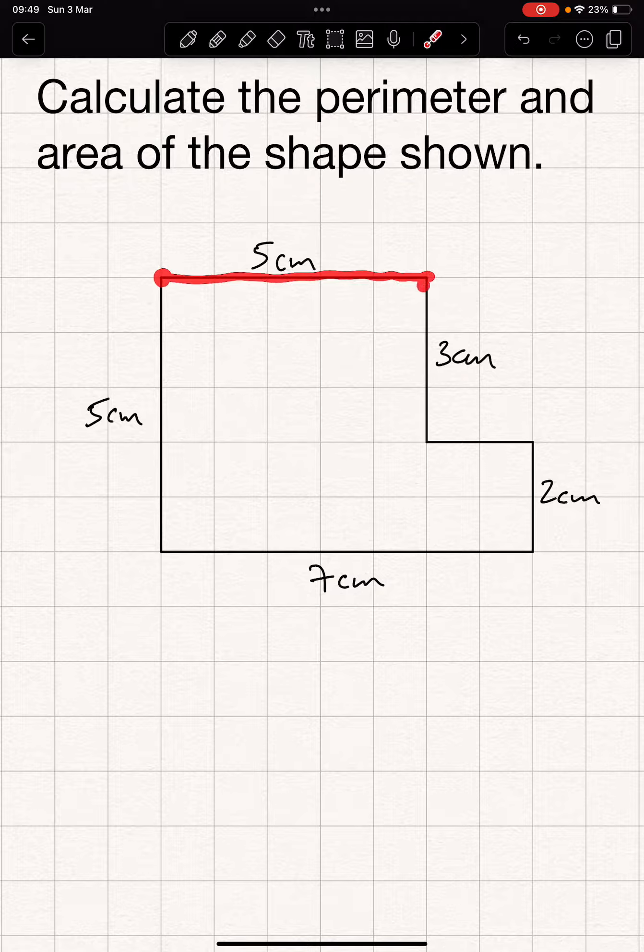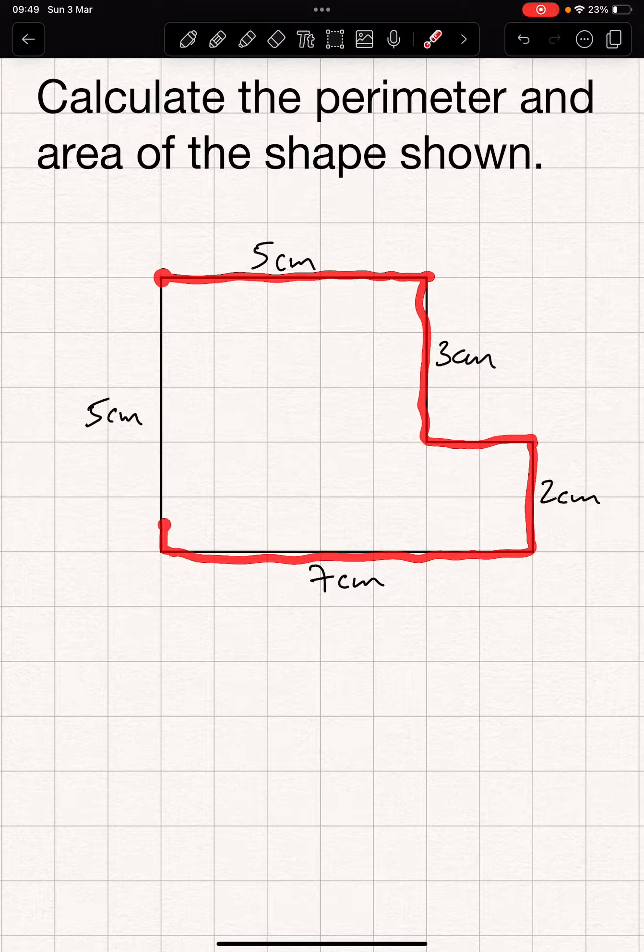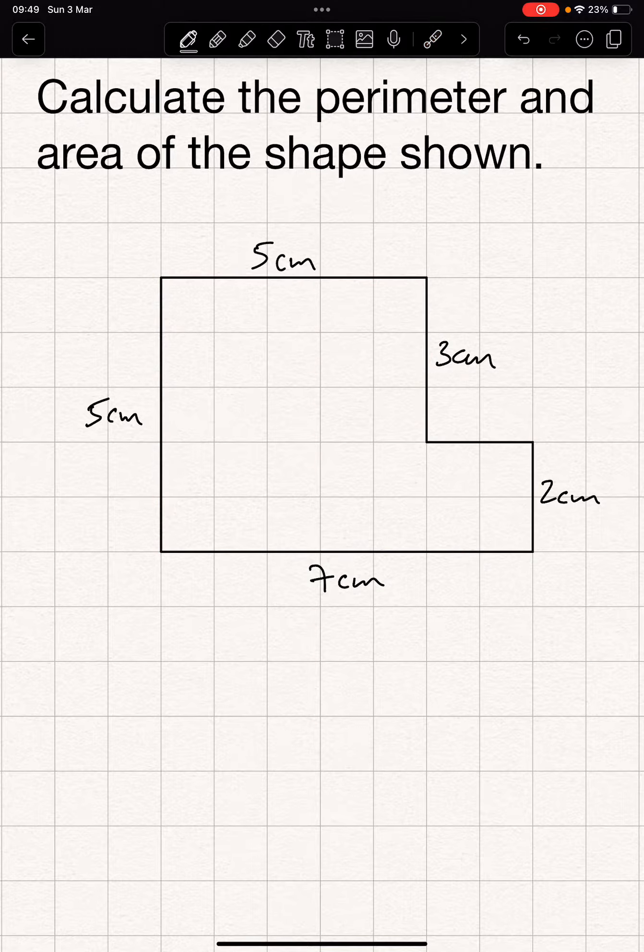It's 5 to there, plus 3, plus this unknown length, plus 2, plus 7, plus 5. That's the perimeter.